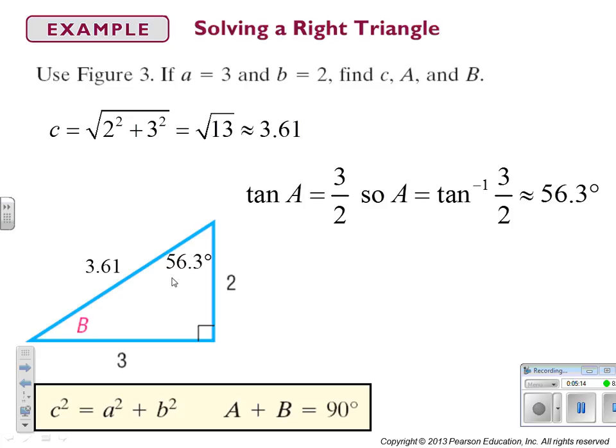So if this is 56.3, this is 90, then B has to be 56.3 plus B equals 90. You subtract 56.3 from both sides, and you get 33.7. Can I use inverse tan of B equals 2 over 3 equals opposite over adjacent? Absolutely, and will I get out 33.7? Absolutely. Is it easier to use the triangle sum theorem? It's so much easier.